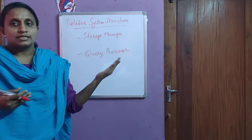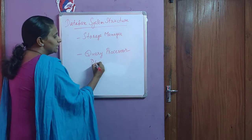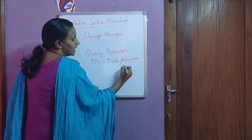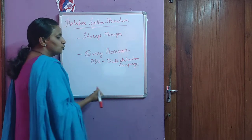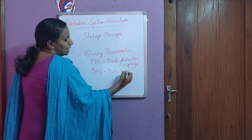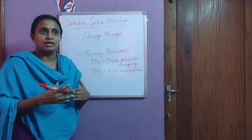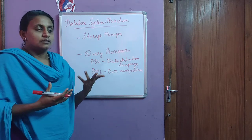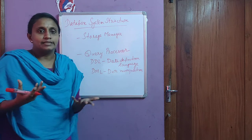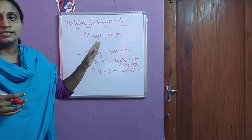The query processor includes DDL and DML. DDL stands for Data Definition Language — it contains commands used for defining the database structure. DML stands for Data Manipulation Language — it contains commands for manipulating data in the database, such as inserting or altering data. In data definition we define the structure, and in data manipulation we insert or change data in the database.